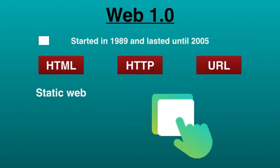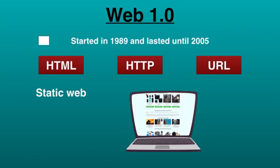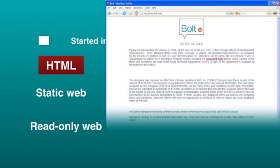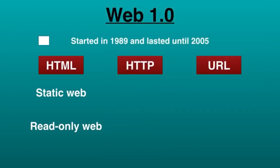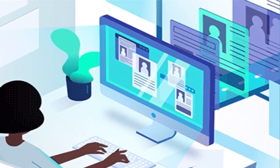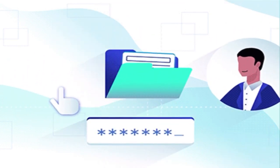Back in the day, creating web pages or even commenting on articles or posts wasn't possible. You can say it was a read-only web. For example, when you went to read an article on a website, there was no option for liking, commenting, or sharing. Another issue with Web 1.0 was it didn't have algorithms to filter web pages, which made it extremely difficult for users to find relevant information. Simply put, it was like a one-way road.